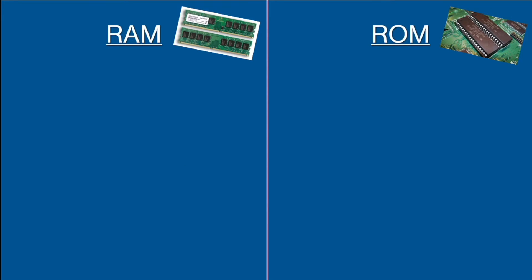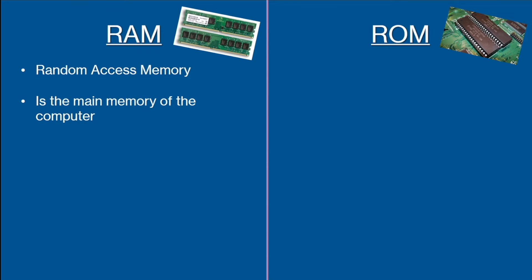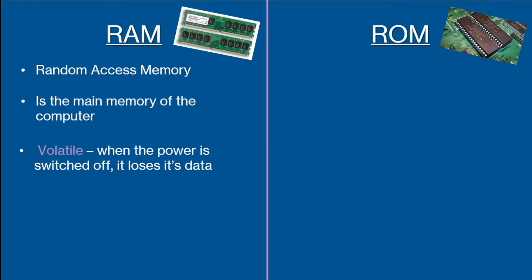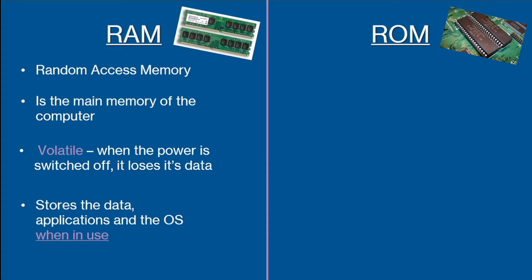Let's compare RAM and ROM. RAM is random access memory and is the main memory of a computer that stores data, applications, and the operating system when in use. When the power is turned off, it loses all its data, meaning it is volatile. Increasing the amount of RAM on the computer means that more data and programs can be kept available, and it also means that programs will run faster.